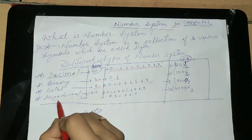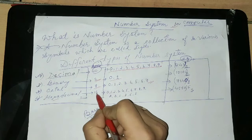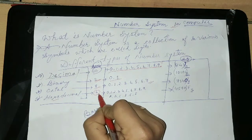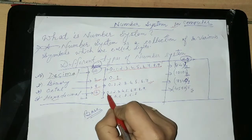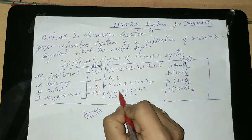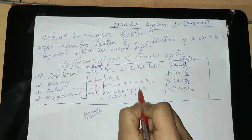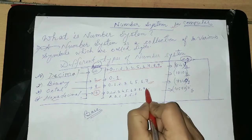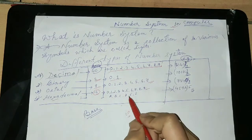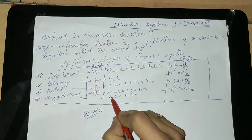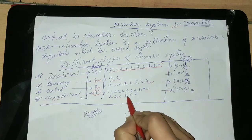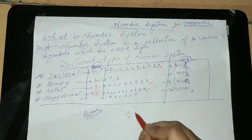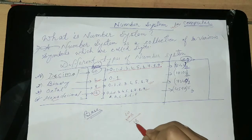And the last is hexadecimal number system. Hexadecimal number system has 16 base and they are 0, 1, 2, 3, 4, 5, 6, 7, 8, 9 — there are 10 numbers total — and here A, B, C, D, E and F. That means 1, 2, 3, 4, 5, 6 — 16 base.